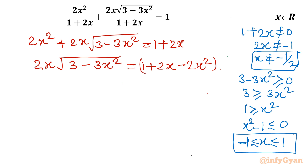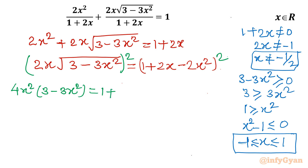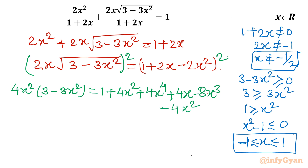Now I will square both sides to eliminate the square root. The left-hand side becomes 4x²(3 − 3x²). For the right-hand side I use the (a + b + c)² identity: a² = 1, b² = 4x², c² = 4x⁴, plus 2ab = 4x, plus 2bc = −8x³, plus 2ca = −4x². The −4x² and +4x² cancel out.